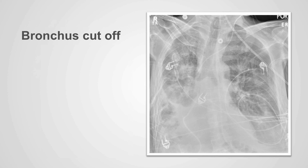Tracheal or bronchial narrowing can be focal or diffuse, and sometimes can lead to complete obstruction of the affected bronchus. In this example, we can follow the trachea inferiorly and identify the left main stem bronchus. However, we can only see the more proximal portion of the right main stem bronchus, as there is complete and abrupt cut-off of the air within the bronchus by an underlying endobronchial tumor.